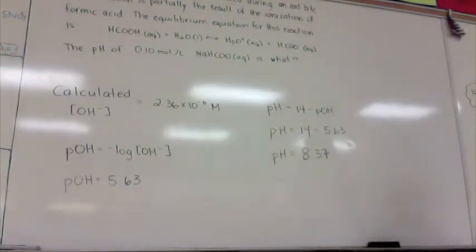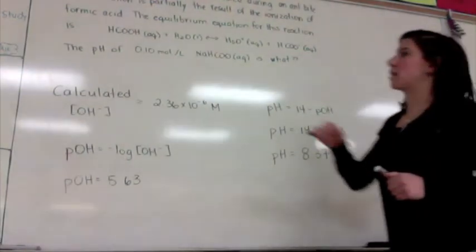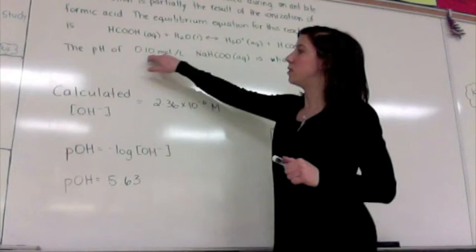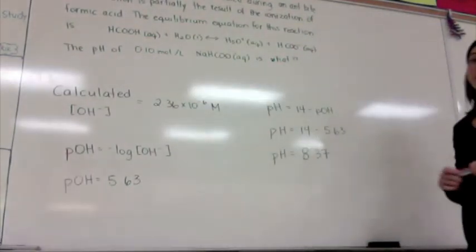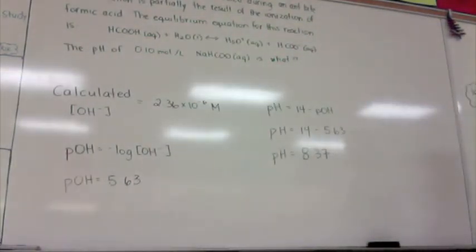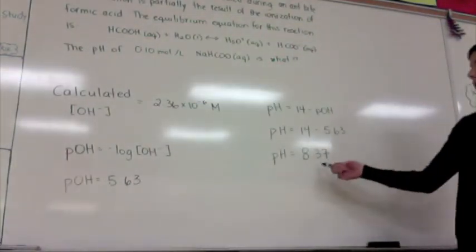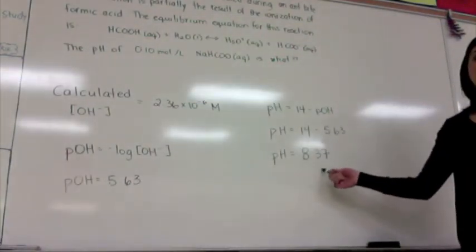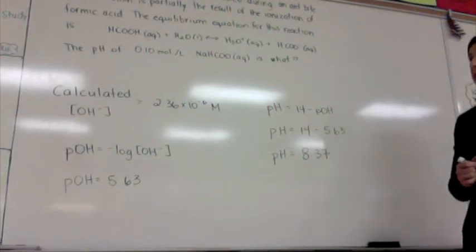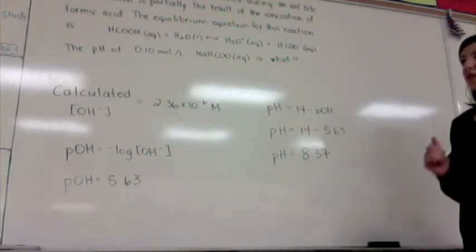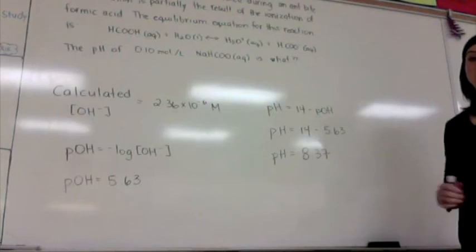In the question we have two significant figures, and remembering that for pH, significant figures are only represented by the decimal places, we have the correct number of sig figs. We have successfully solved for our pH of 8.37.